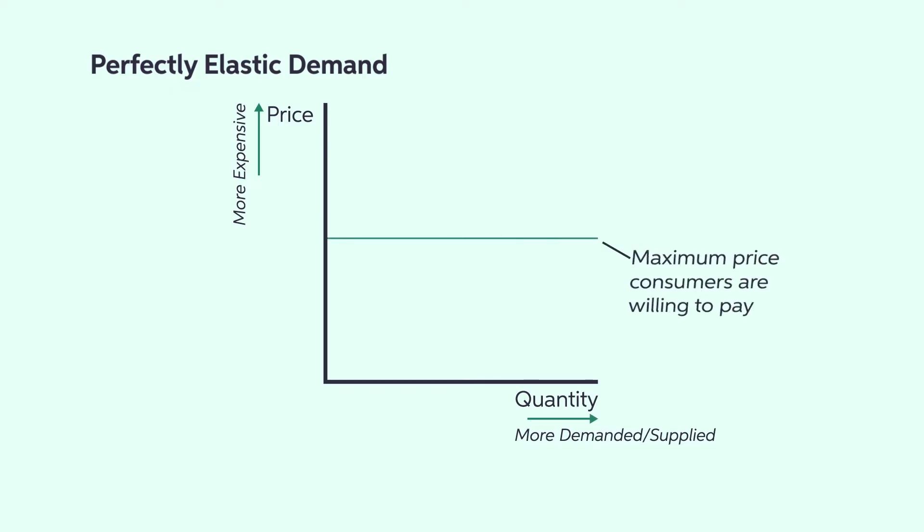Suppose a good exhibits perfectly elastic demand. That means consumers are extremely influenced by price. If two firms sell it at the same price, any attempts by one firm to increase revenue by raising the price ultimately rewards its competitor because consumer demand for that product is perfectly elastic.